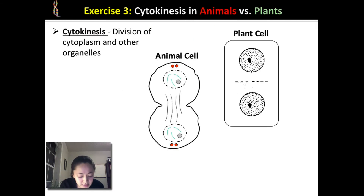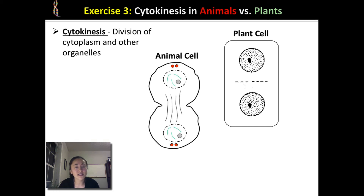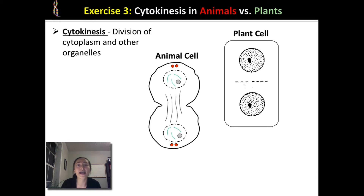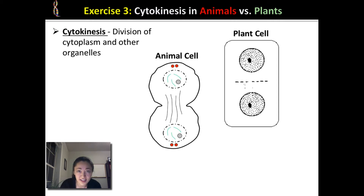An important distinction: cytokinesis is not part of mitosis. Mitosis only consists of four stages — prophase, metaphase, anaphase, and telophase. If asked to name a phase of mitosis or meiosis, you should never write down cytokinesis, and you should also never write down interphase. Interphase is not part of mitosis or meiosis, and neither is cytokinesis.